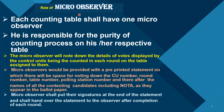Role of Micro-Observer. Each counting table shall have one Micro-Observer. He is responsible for the purity of the counting process on his or her respective table. The Micro-Observer will note down the details of votes displayed by the control units, being the count in each round of the table assigned to them.